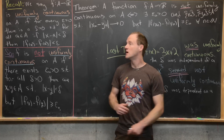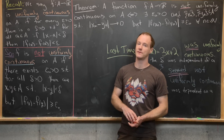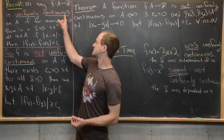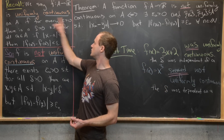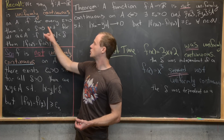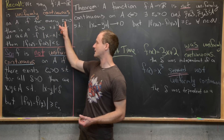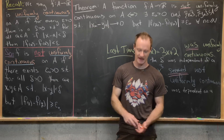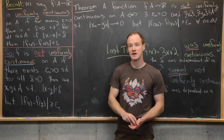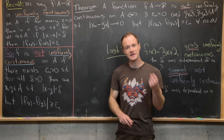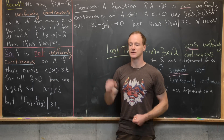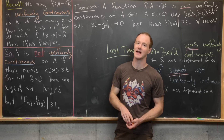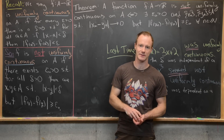The most important part of uniform continuity is that regardless of what epsilon you pick, this delta depends only on epsilon and not on the point a being tested. In other words, delta is fixed for the entire set once epsilon is given.